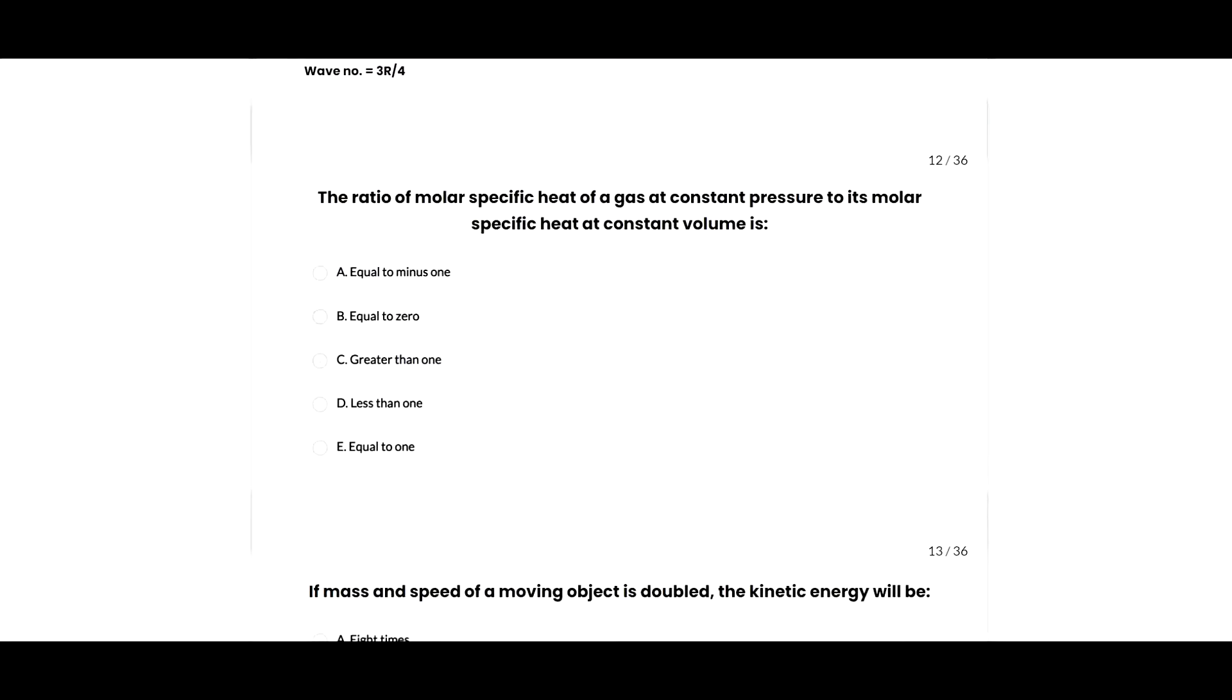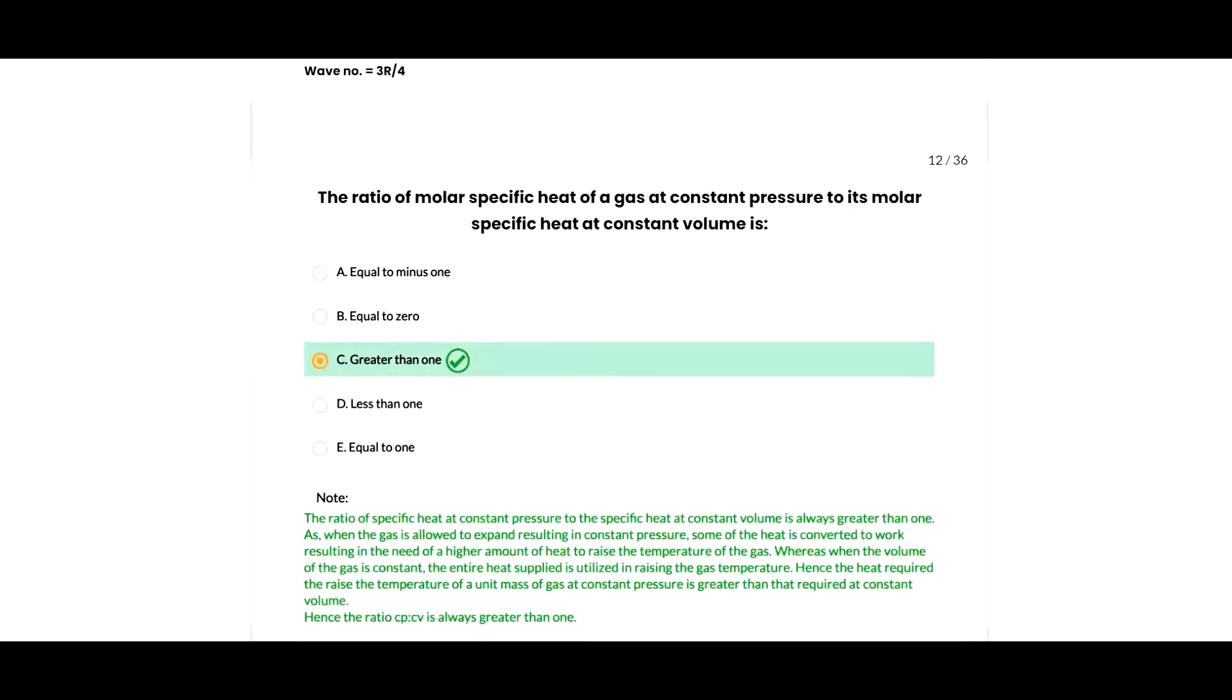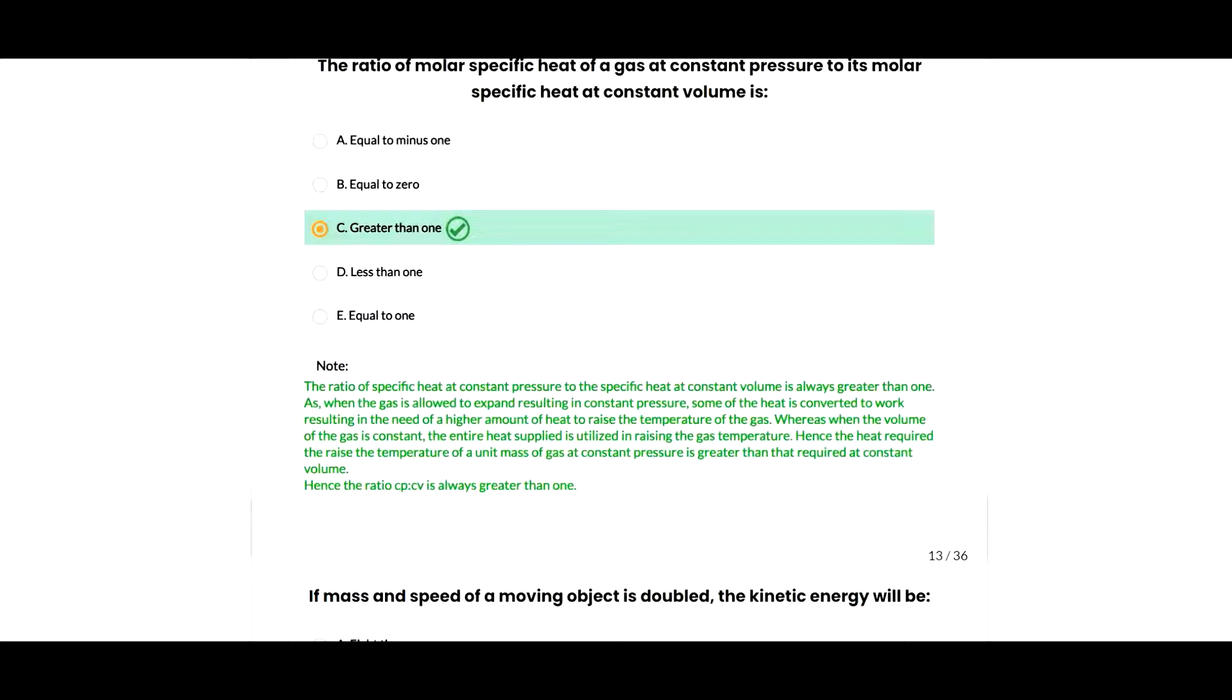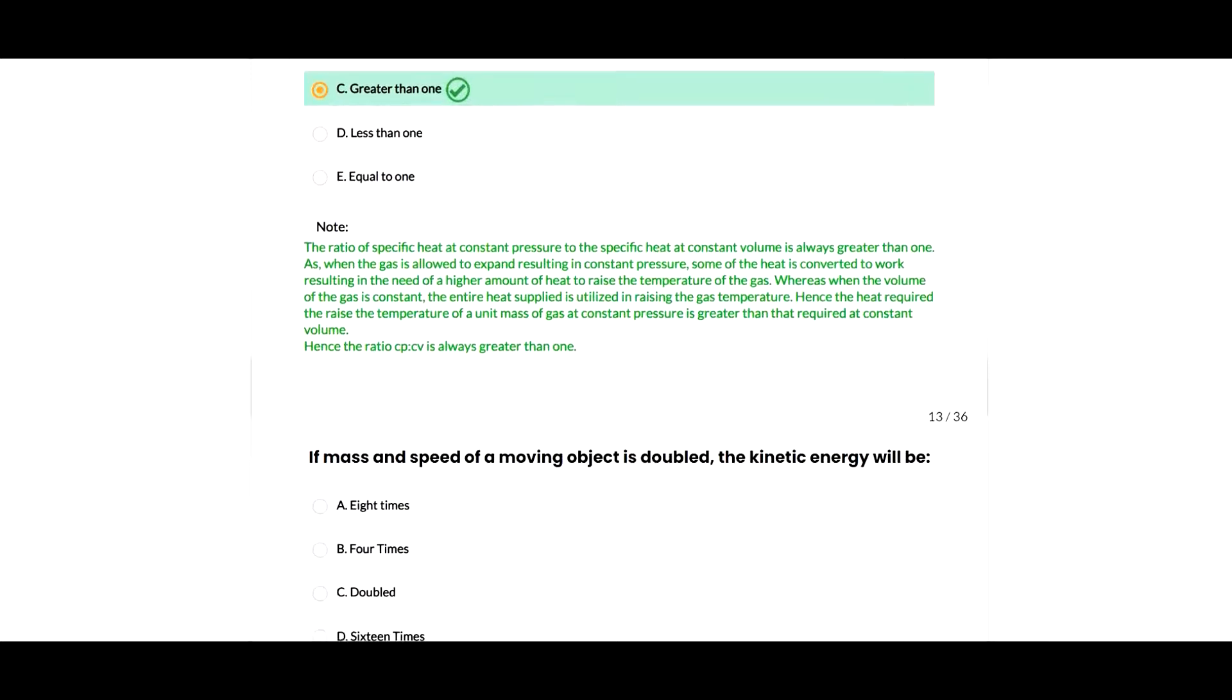Next question: the ratio of molar specific heat of a gas at constant pressure to molar specific heat at constant volume will be given as greater than one. The ratio CP to CV is always greater than one, as when the gas is allowed to expand at constant pressure, some of the heat is converted to work, resulting in the need of a higher amount of heat to raise the temperature. Hence the ratio CP to CV is always greater than one, so C option is correct.